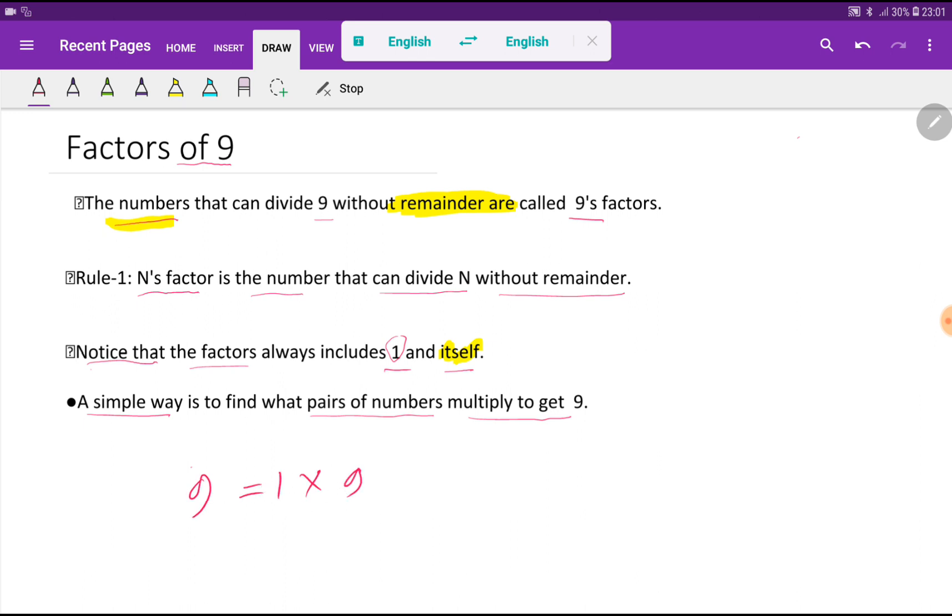That is why the factors of 9 are 1 and 9. A simple way is to find what pairs of numbers multiply to get 9. If you multiply 1 and 9, then you will get 9. That is why 1 and 9 are the factors of 9.